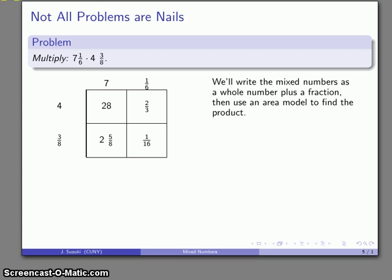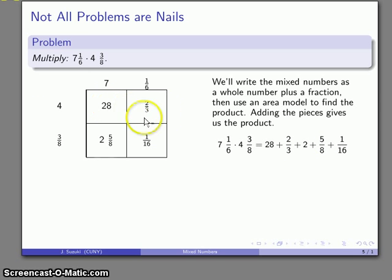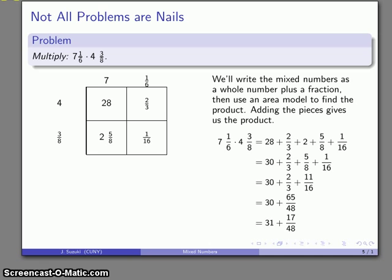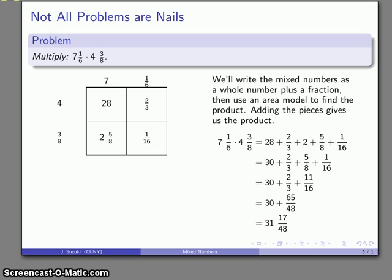Remember, for the area model of multiplication, the area is the product. So I'm going to add all these pieces together to find what the product 7 and 1/6 times 4 and 3/8 is. So I'm going to add those together: that's 28 plus 2/3 plus 2 and 5/8 plus 1/16. I can add the whole numbers, 28 and 2. I can add this bunch of fractions here. And I might start out by noting that these two almost have an easy common denominator. That's 10/16, 11/16. I'd have to do a little bit of work here. 3 and 16, 48, and so on. So again, get the improper fraction 65/48. Split it, combine, and write our final answer: 31 and 17/48.